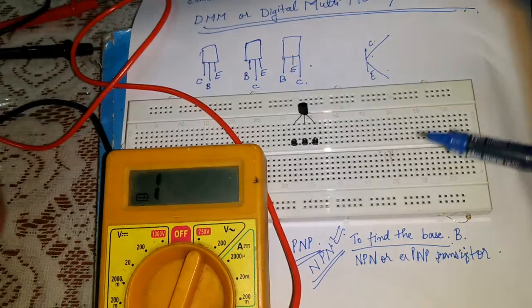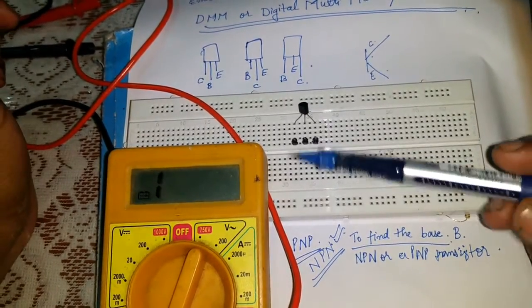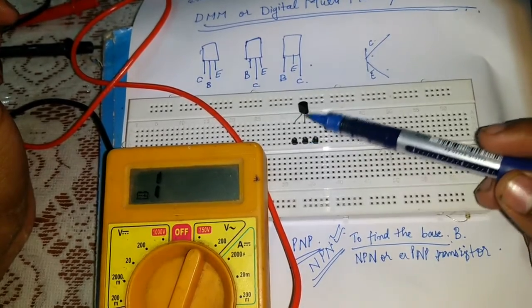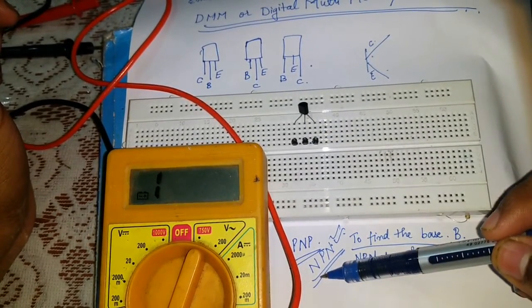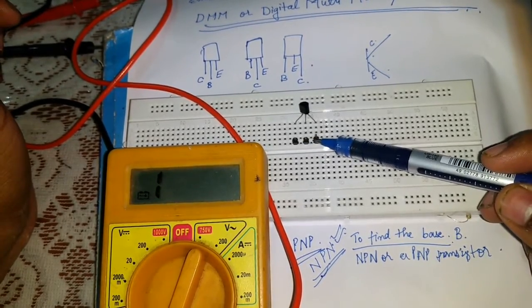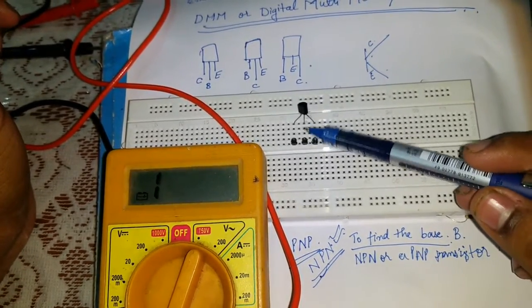That's how we determine PNP or NPN. Now we have seen that there was a deflection in point two, pin number two. So we can say that it is an NPN transistor. Moreover, there was a both side deflection, so our middle terminal is base.